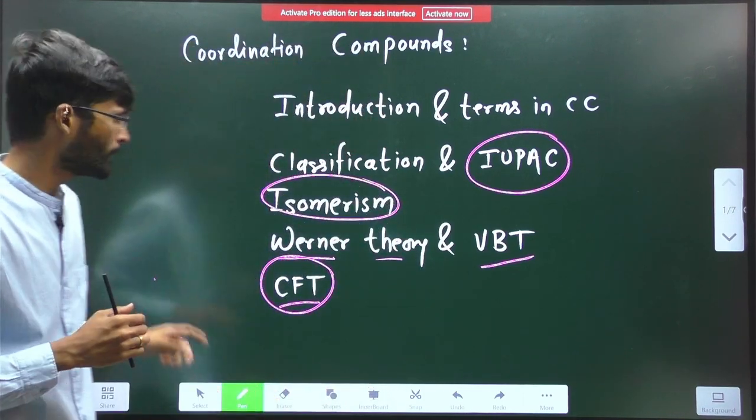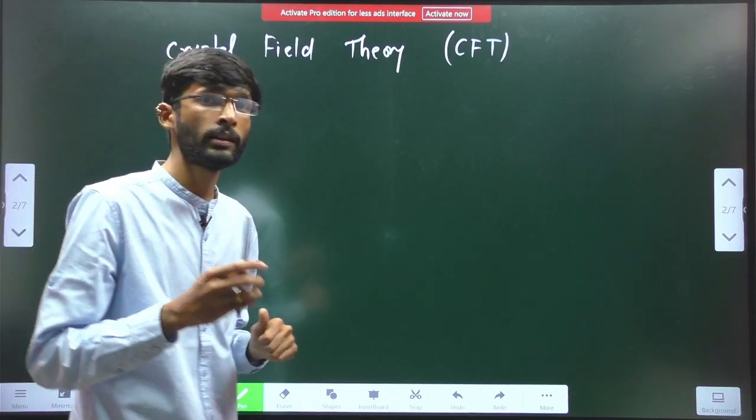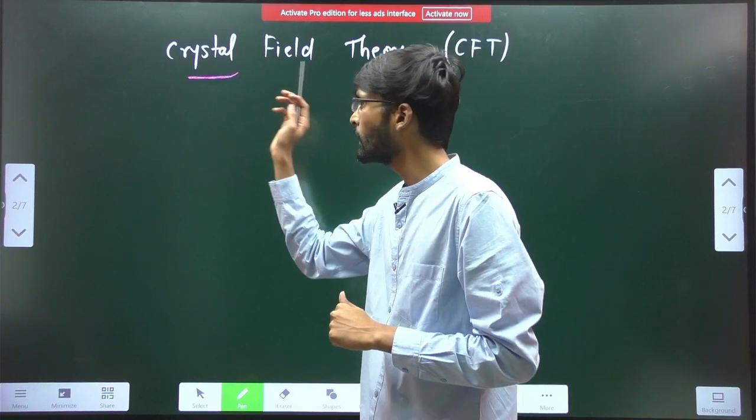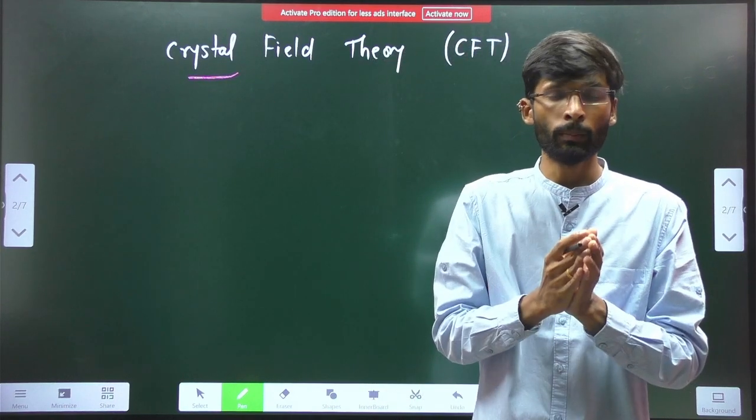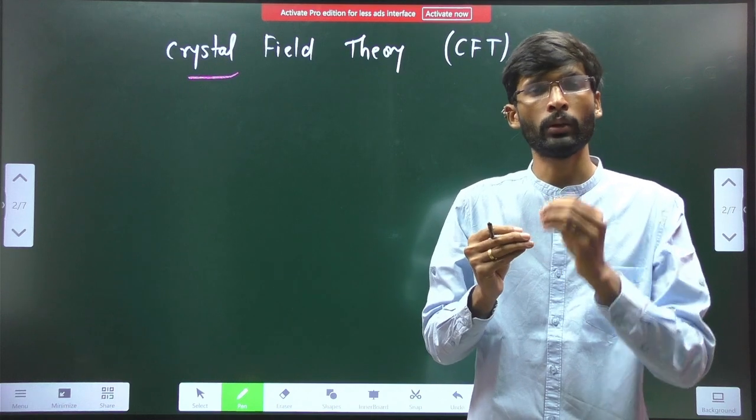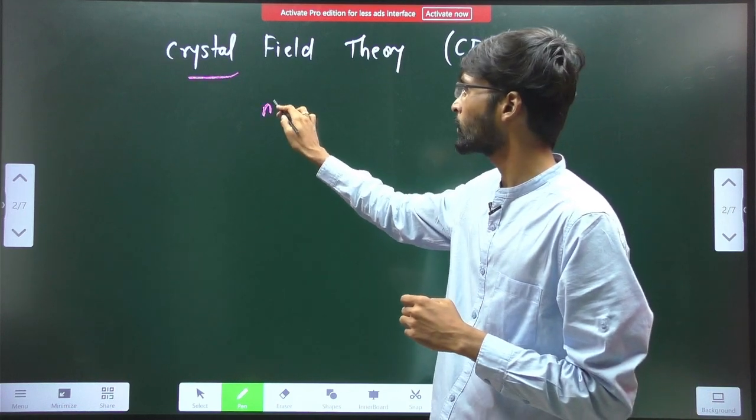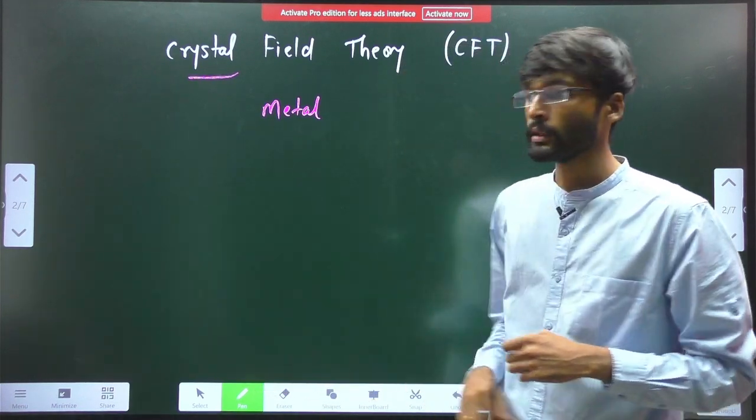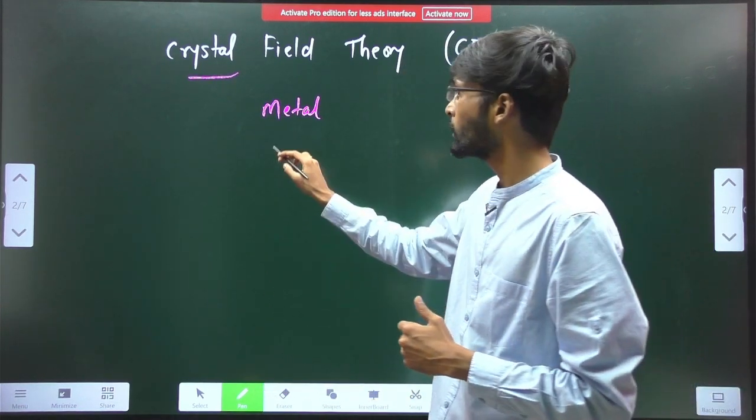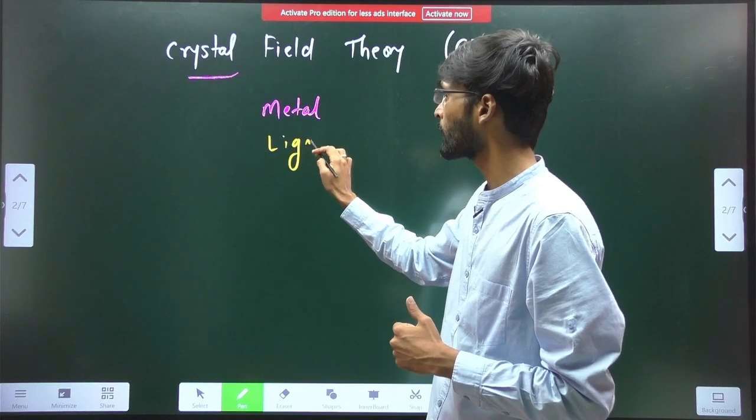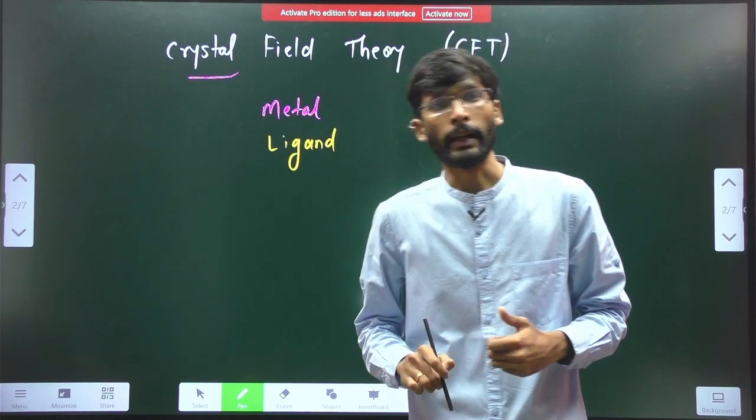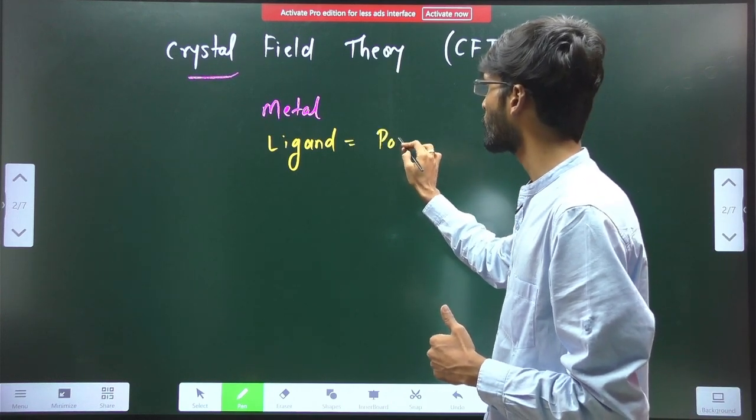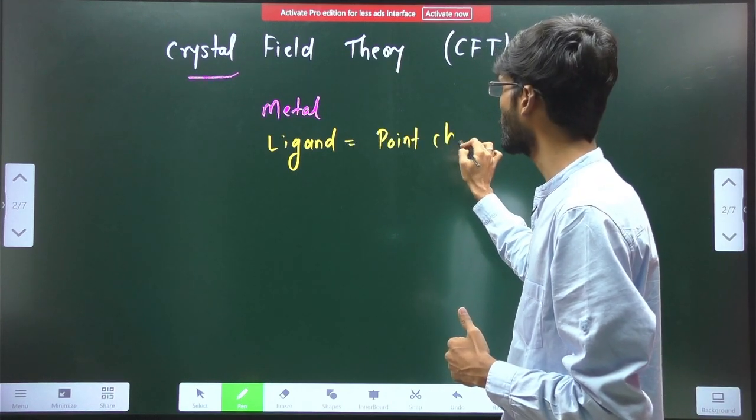Now, what is this CFT? This CFT stands for crystal field theory. What is the meaning of crystal field theory? In this case, if we know the Coordination Compound, you already know that two parts are: one part is metal, which is present at center. And then there is second part, which is ligand. Now, this ligand is considered to be a point charge in crystal field theory.